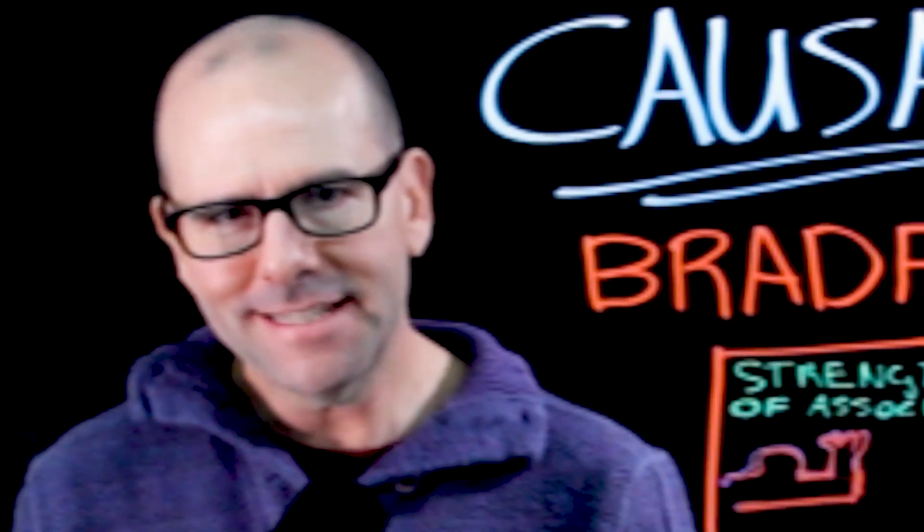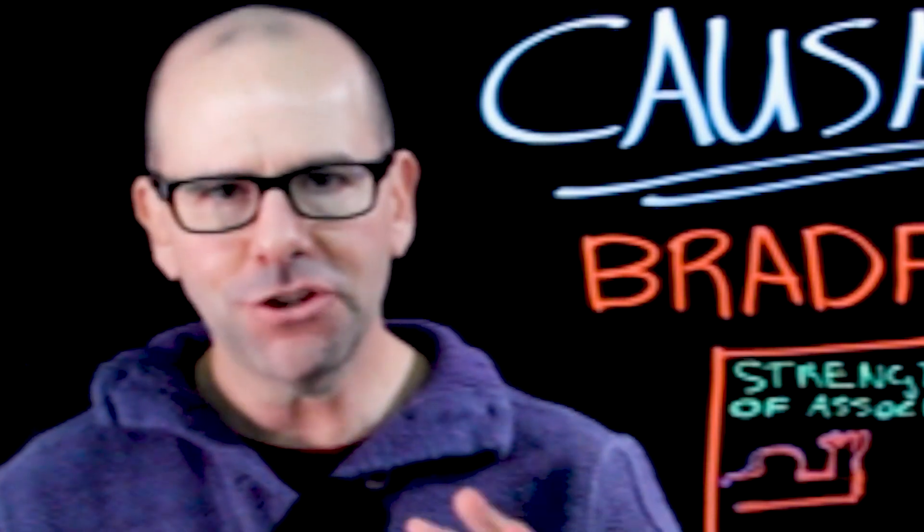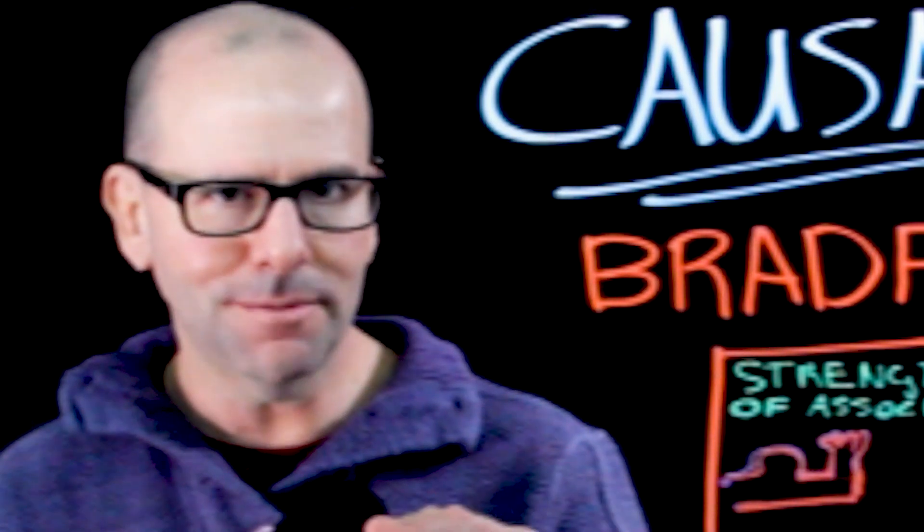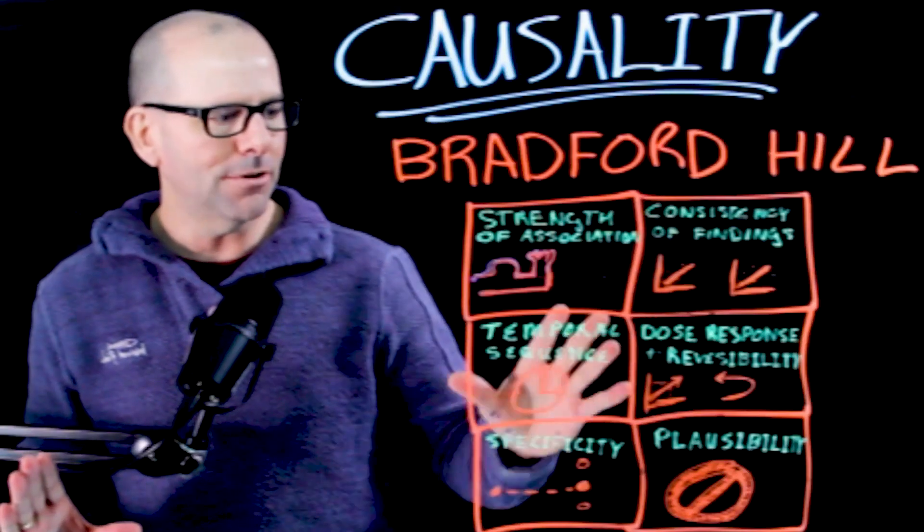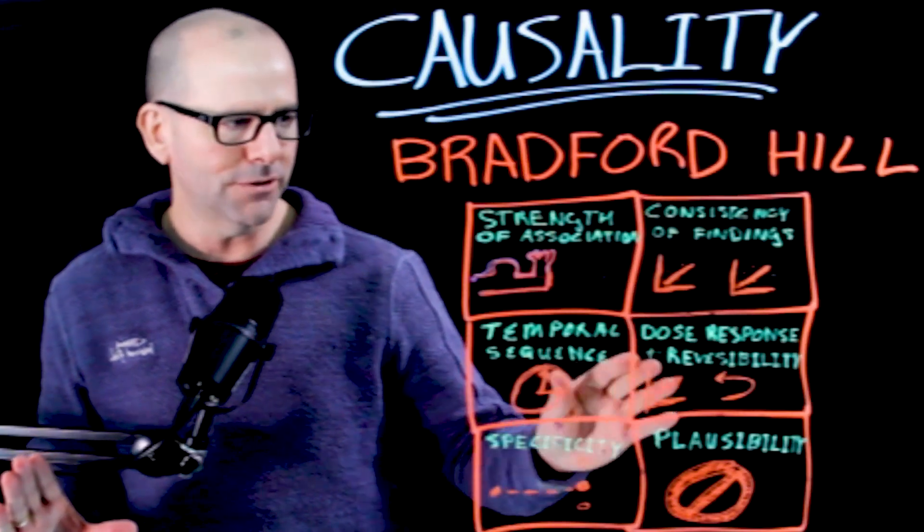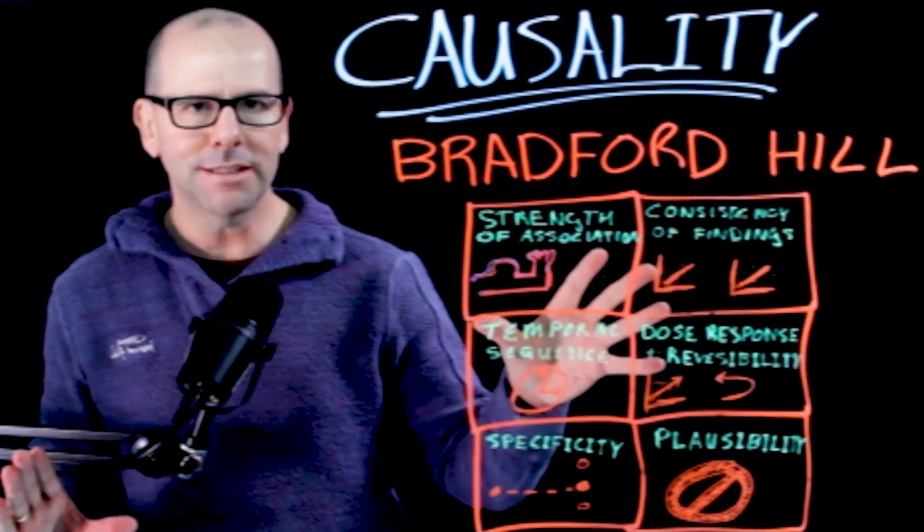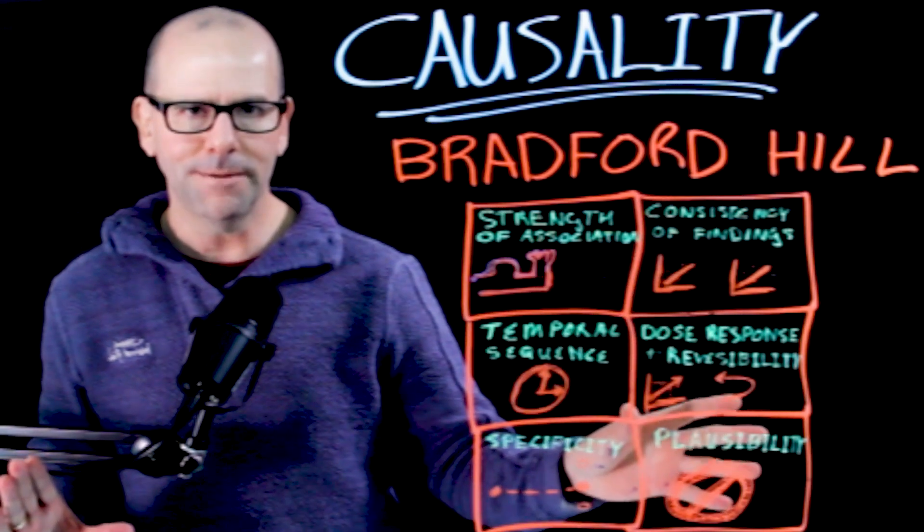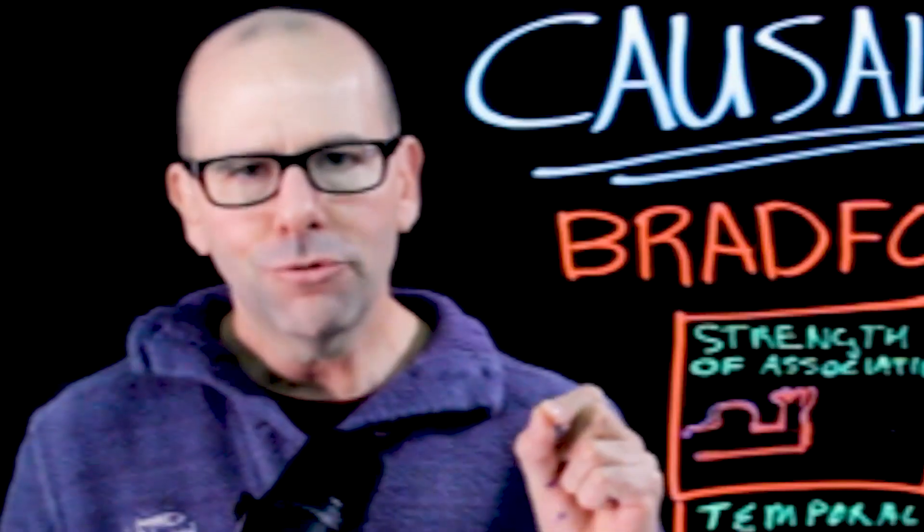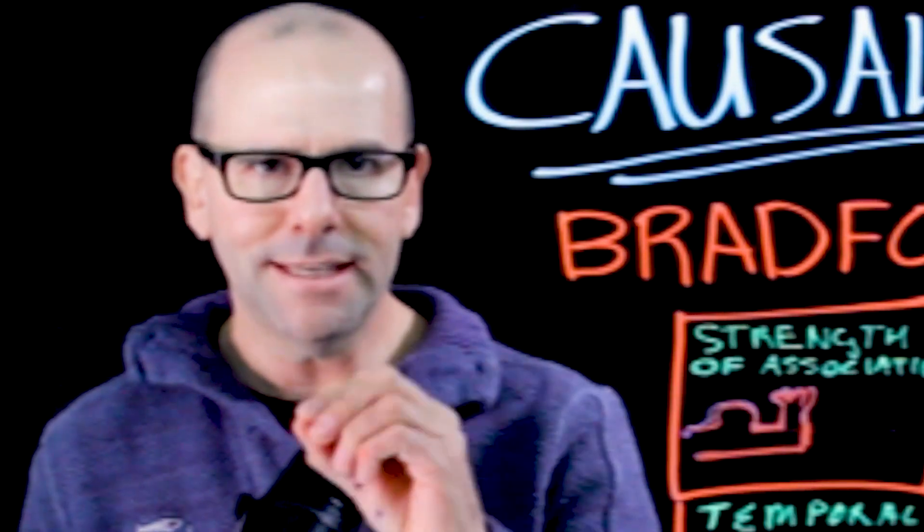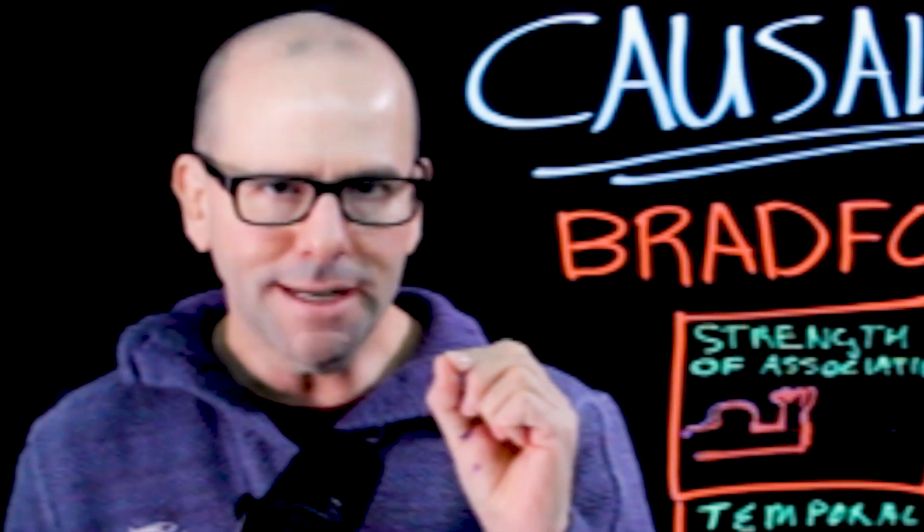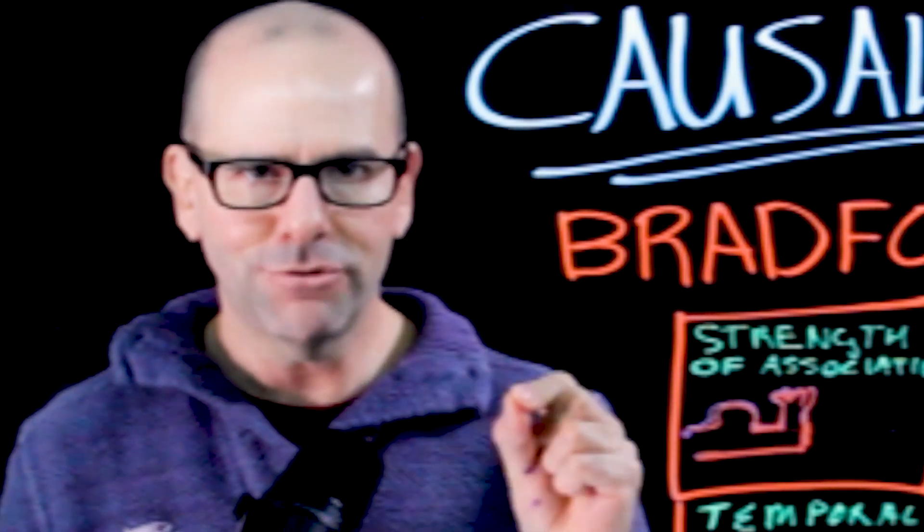Look, our starting point is that we've seen something in the data. We've seen a signal in the data that there is a relationship, that there is a correlation between an exposure and an outcome. The question we're trying to answer is, is the nature of that relationship causal? If you look at five of these six criteria or seven criteria, if you break dose response and reversibility up, if you look at these criteria, all of them except plausibility, all of them are basically restating the correlation. All of them are just re-describing the signal that we've already seen in the data. They're not giving you an idea or any evidence about the nature of that relationship.